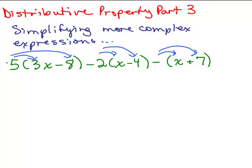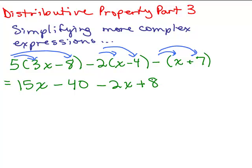We've got 5 — there's no negative sign in front of it, so that means positive 5. So we have 5 times 3x, that will be 15x. Then we have 5 times negative 8, so that would be minus 40. Now we've got minus 2 times x, that will be negative 2x. And here is the trick: we've got a negative 2 times a negative 4. That will be a plus 8, not a minus 8, not a minus 4. It's a negative 2 times a negative 4.